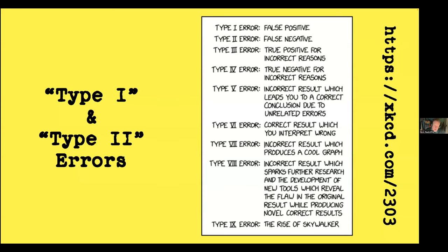Type 1 and type 2 errors: no one knows which is which — some people think they do sometimes, but no one remembers it all the time. Randall Munroe, the author of XKCD, introduced some more errors, including type 6 errors: a correct result which you interpret wrong — which is the subtitle of this talk. Even the terms false positive and false negative are problematical because for many things it's not clear which is the positive and which is the negative outcome.